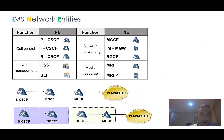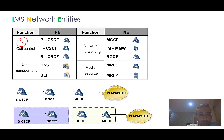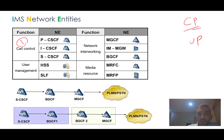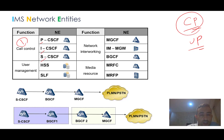In brief, IMS consists of four main parts. The first and most important is call control, where the key network element is the CSCF. When the signaling or control plane is not present, there is no user plane either, so call control is the most critical part. This includes the Proxy CSCF, Interrogating CSCF, and Serving CSCF. In real scenarios that I will discuss later, you will learn the main application of each node better.